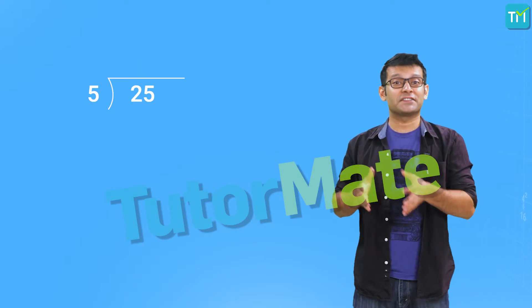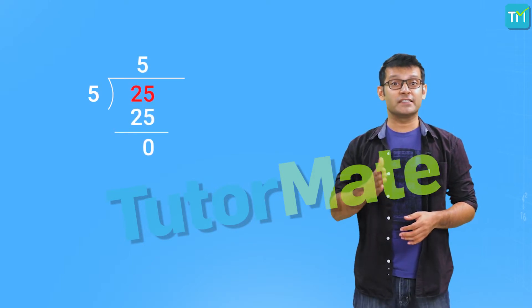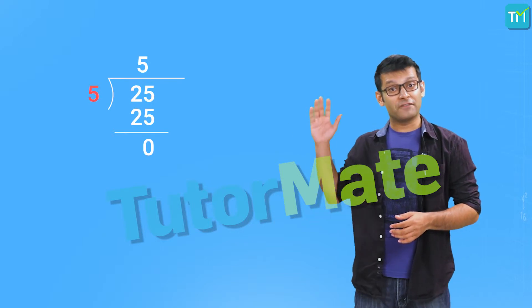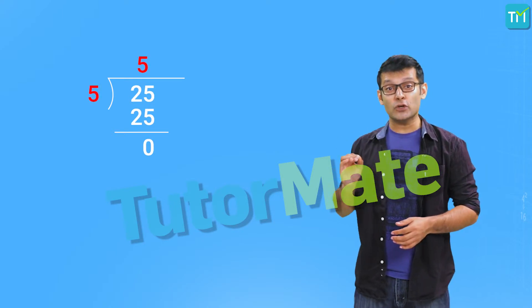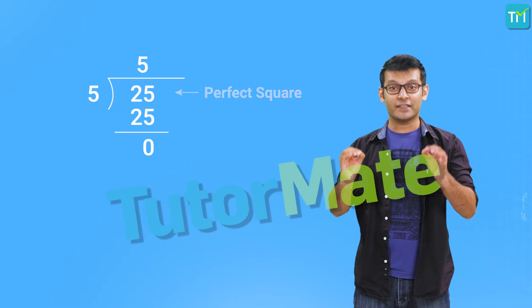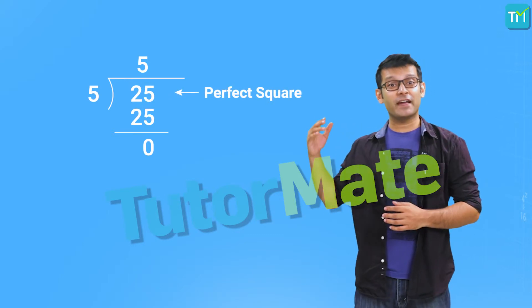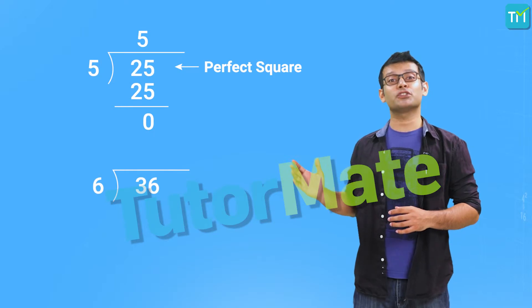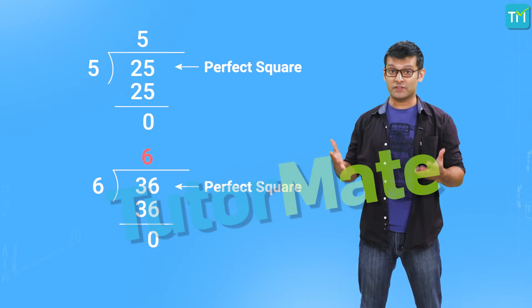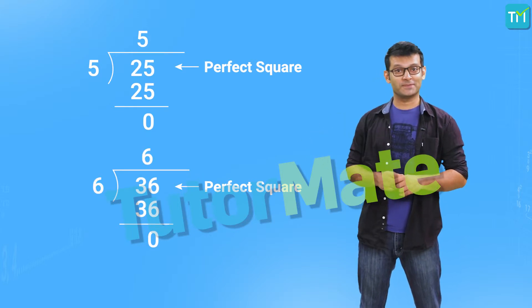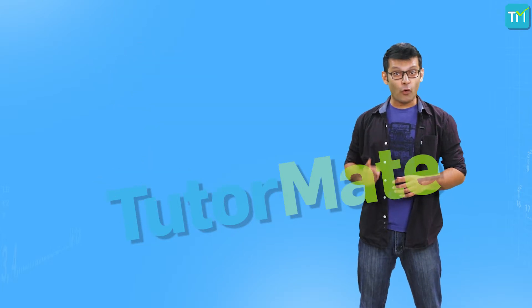If we divide 25 by 5, then we get the answer as 5. In this case, 25 is the dividend, 5 is the divisor, and 5 is also the quotient. Clearly, the divisor is equal to the quotient, so we get 25 as a perfect square. Similarly, if we divide 36 by 6, we get the quotient as 6. Even in this case, the divisor is 6 and the quotient is also 6, which gives us divisor equal to the quotient. So the numbers 1, 4, 9, 16, 25, 36 and so on are all perfect squares.